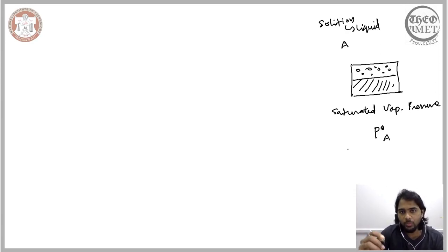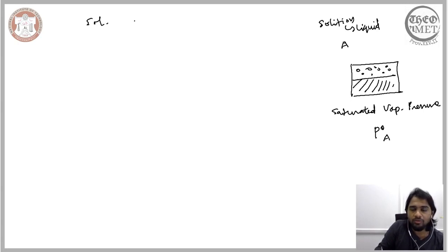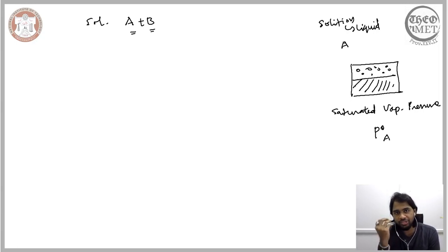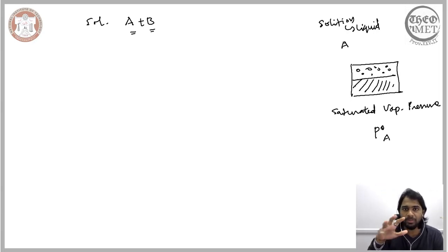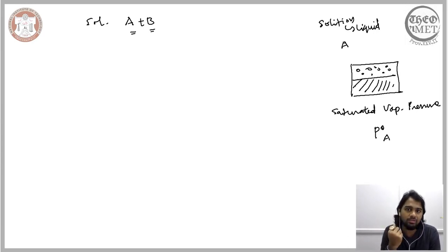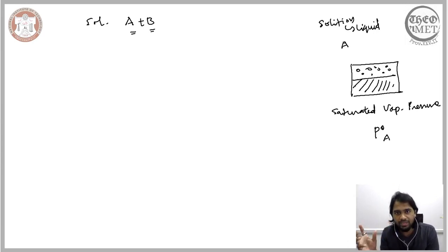That is the case for a unary material A. Now if we consider a solution involving two unary components A and B, in the single-component liquid case the rate of condensation and the rate of evaporation are equal at dynamic equilibrium. Since both are equal, we can formulate whichever is easier and equate it to the other.